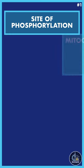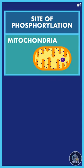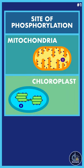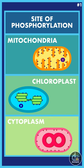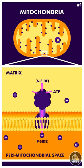The main site of phosphorylation is mitochondria, but it also occurs in chloroplast and in the cytoplasm. In mitochondria, the intermembrane space becomes the P-side and the matrix becomes the N-side.